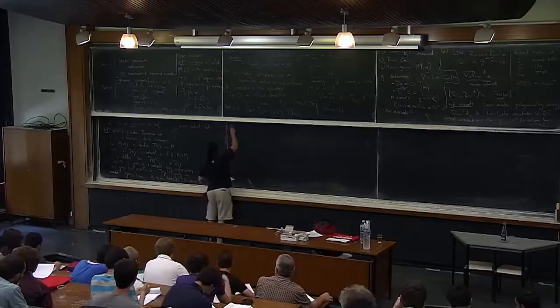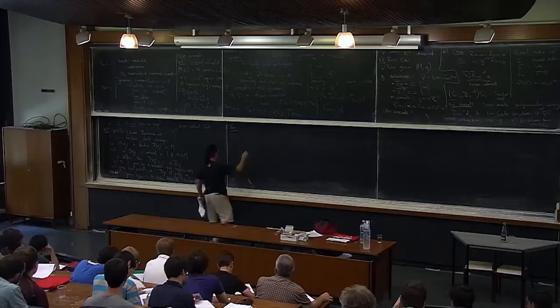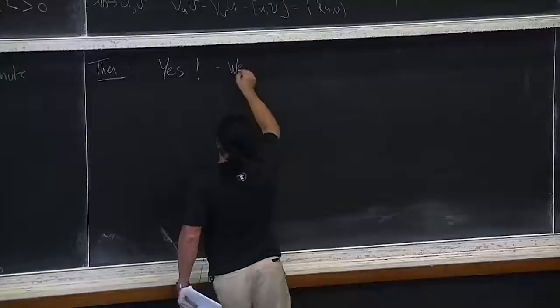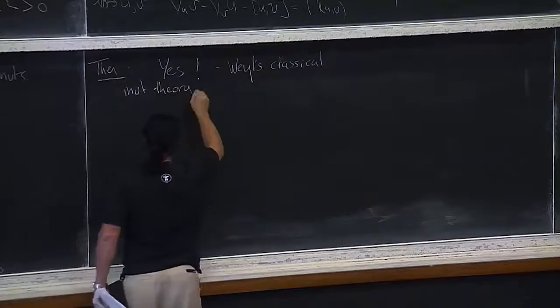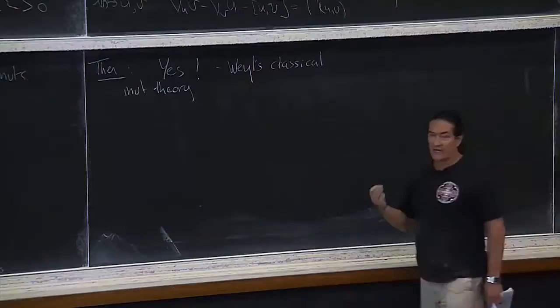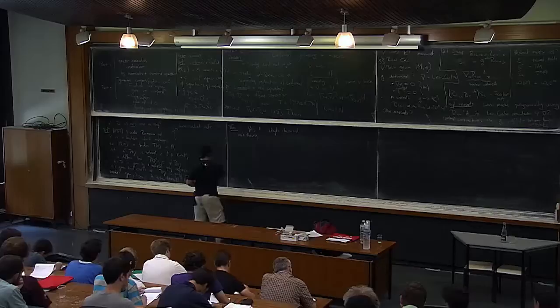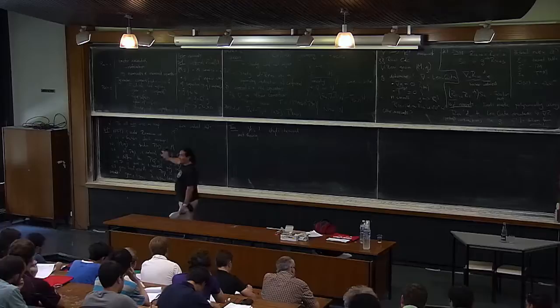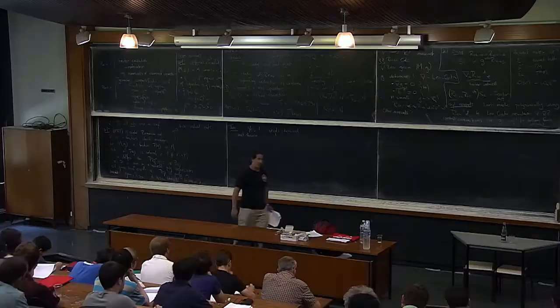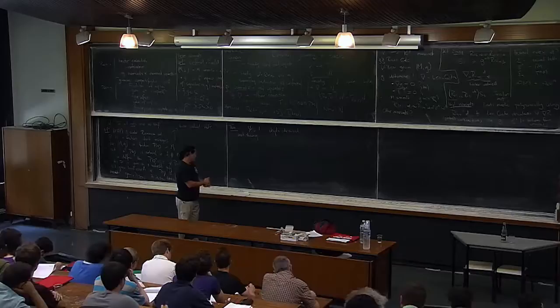Well, if we make that definition, then the answer to the question — do all invariants arise as Weyl invariants — is yes. This is called Weyl's classical invariant theory. Weyl really answered the related algebraic problem to do with groups acting on a vector space, and then on top of that you need to use normal coordinates and so on. But in principle, Weyl's theory gives you this result. So in the following I'm going to take Riemannian invariants, or pseudo-Riemannian invariants, to be Weyl invariants.